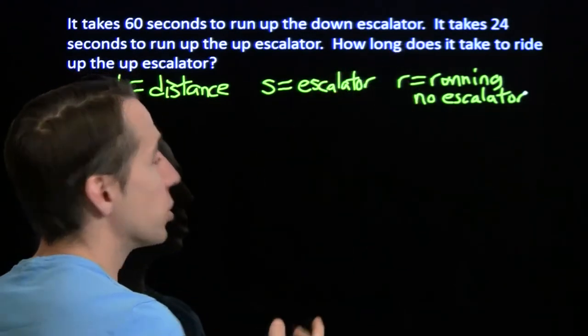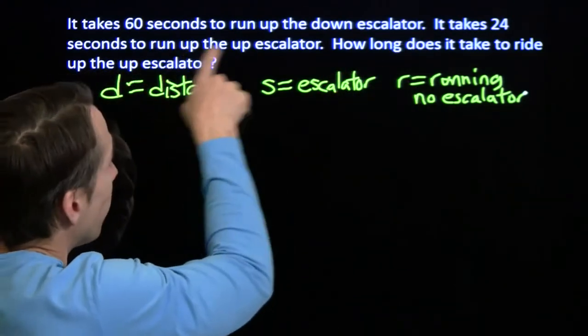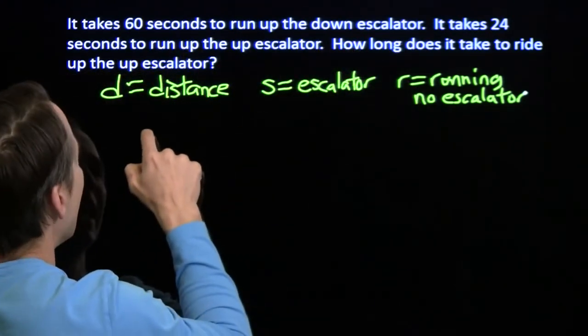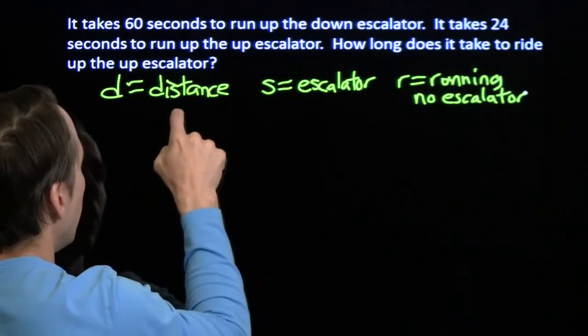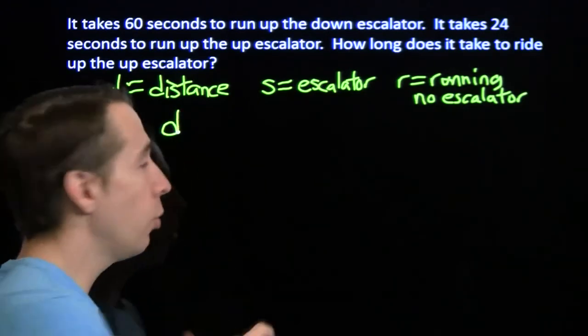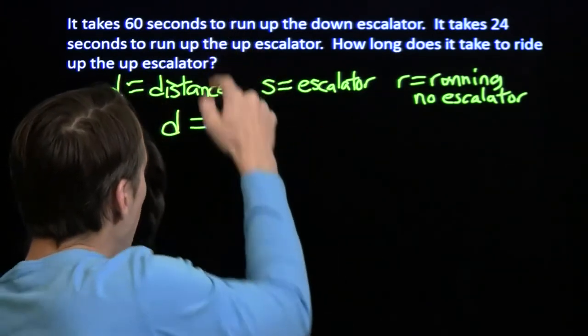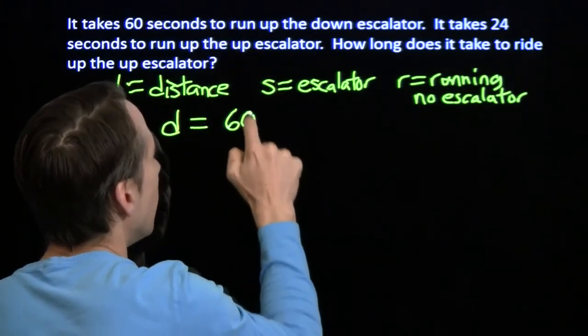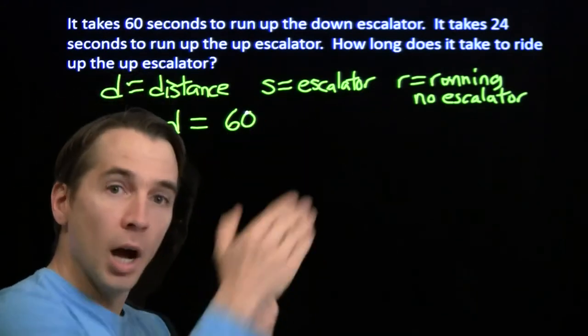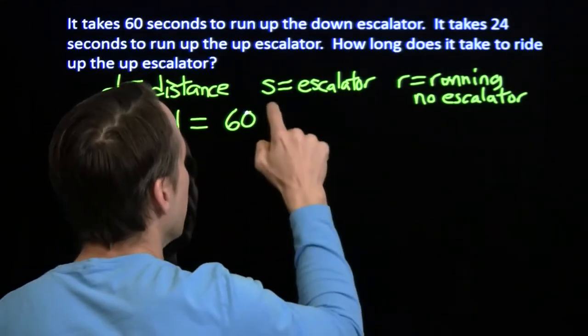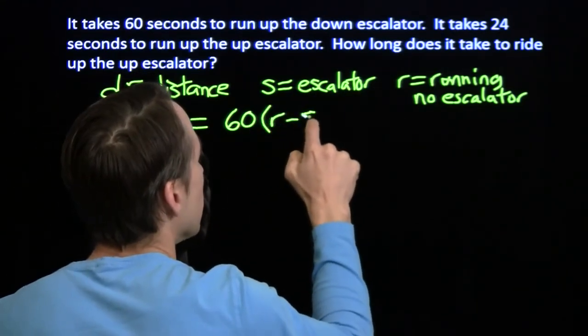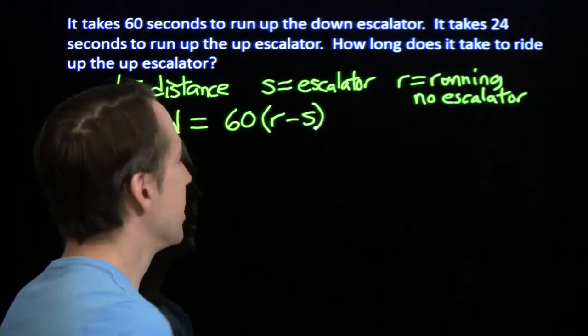And we're given the times here, so we can write some equations. First, for running up the down escalator, we'll cover the whole escalator, the whole distance, is our rate times the time. Well, the time is the 60 seconds. And our rate when we're running up the down escalator is the difference of these. It's r minus s.